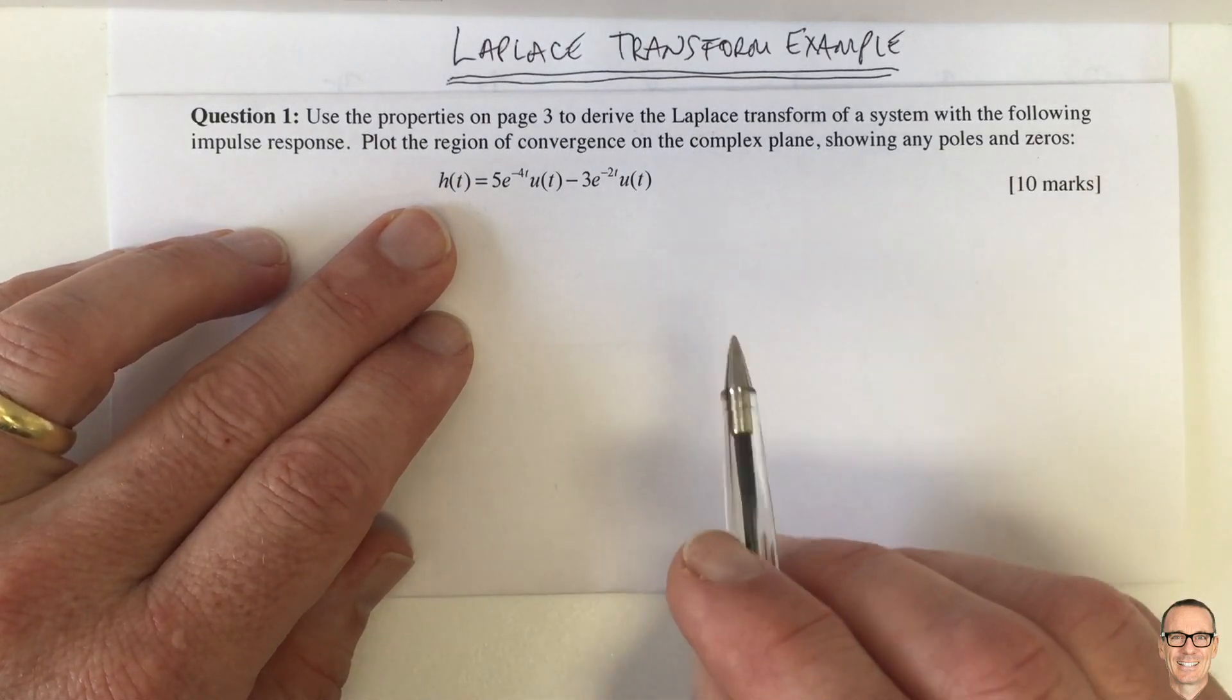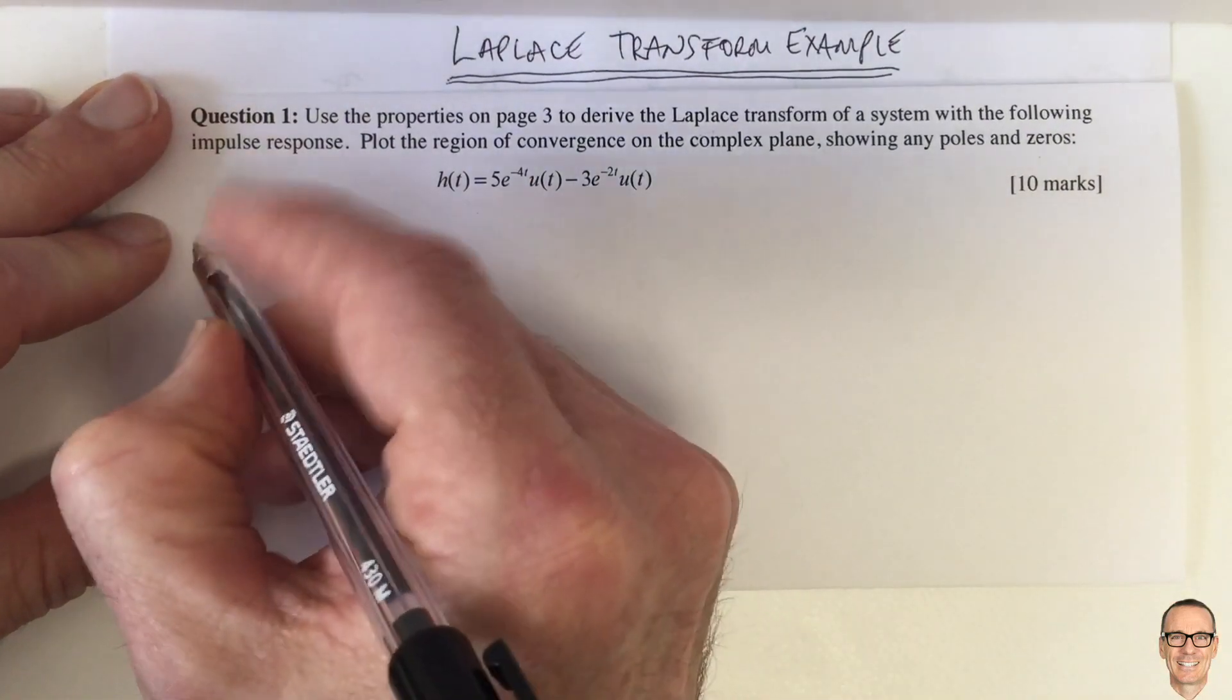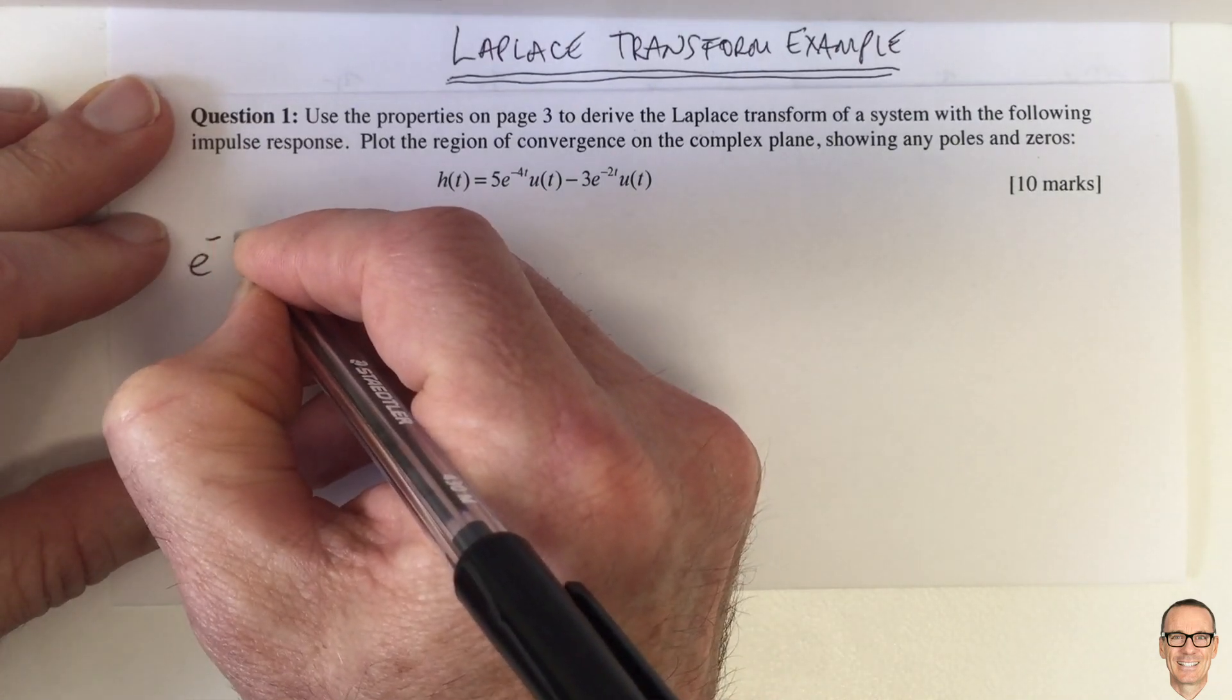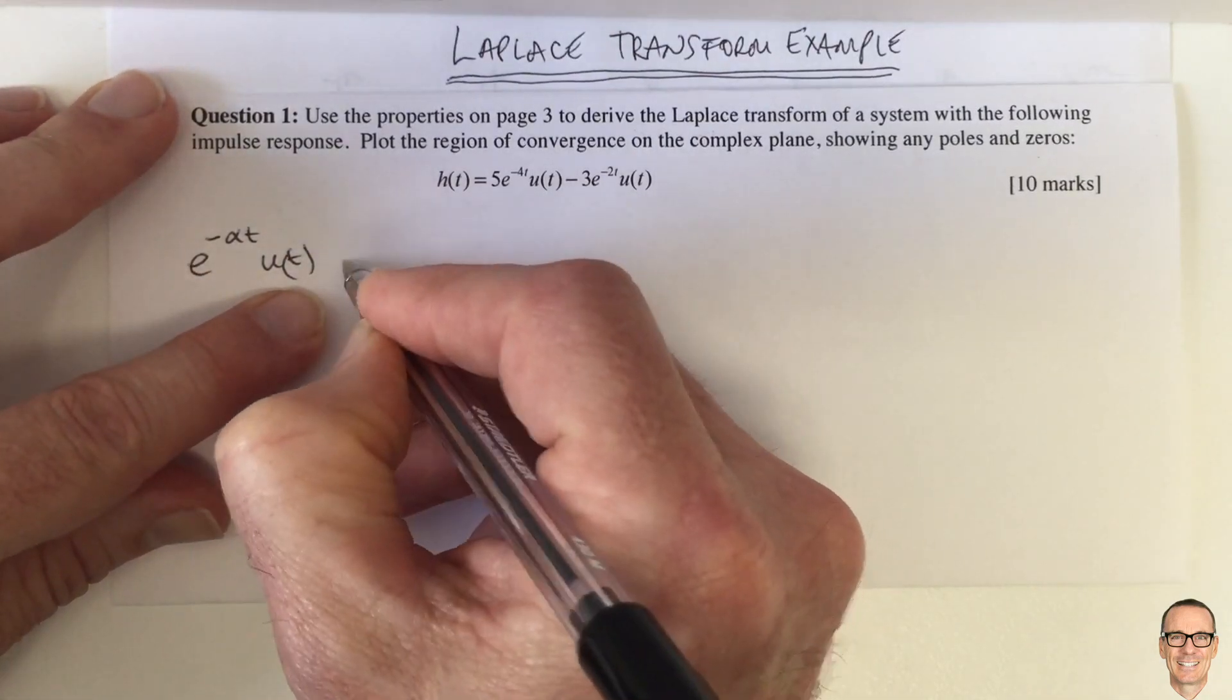And we need to show any poles and zeros. So we can look at the table of Laplace transforms and we can see that the very common one is e to the minus alpha t times ut. If we have that function in the time domain,